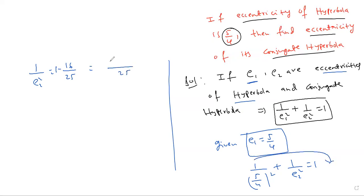25 is LCM. 25 minus 16 by 25 which is 9 by 25. 1 by e2 square is 9 by 25. Then what is e2 square? 25 by 9. If e2 square is 25 by 9, e2 is 5 by 3.